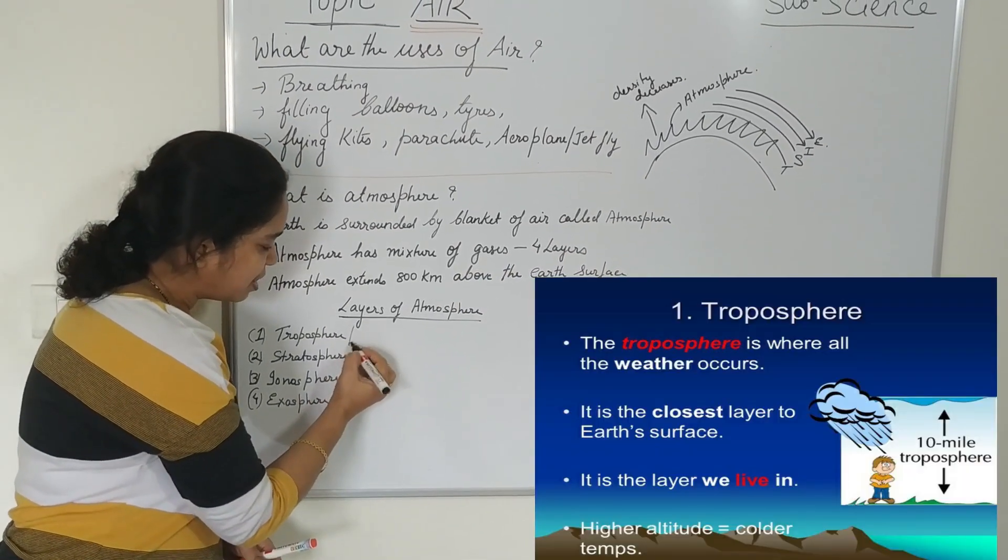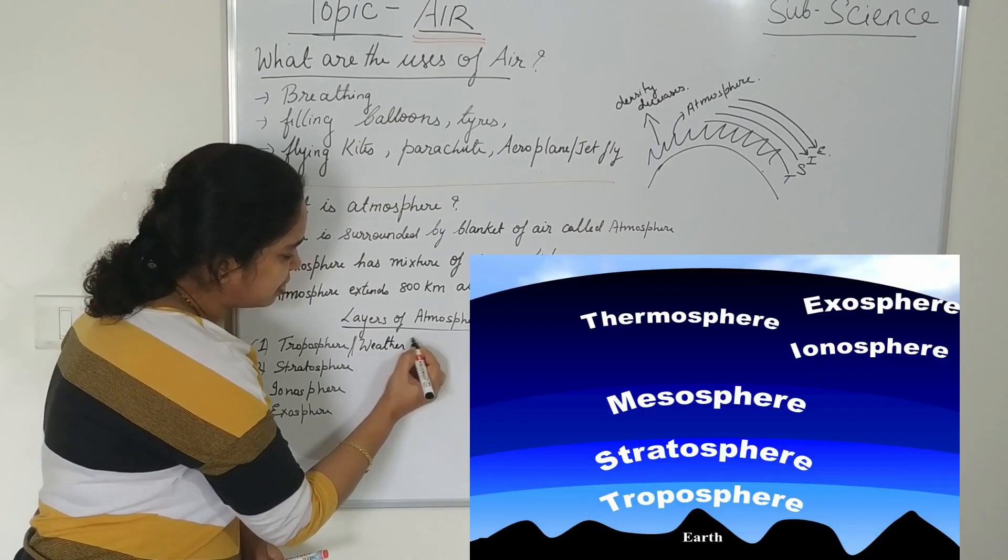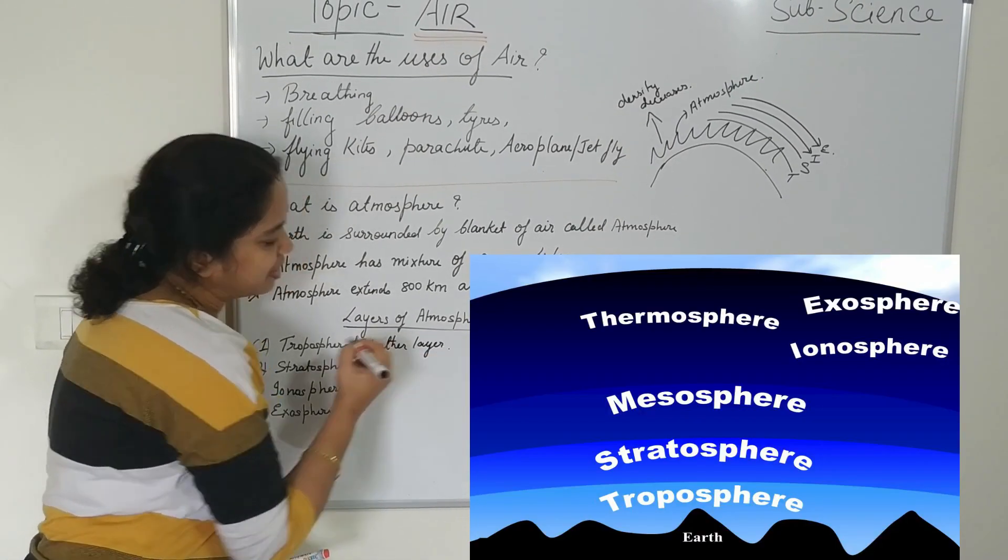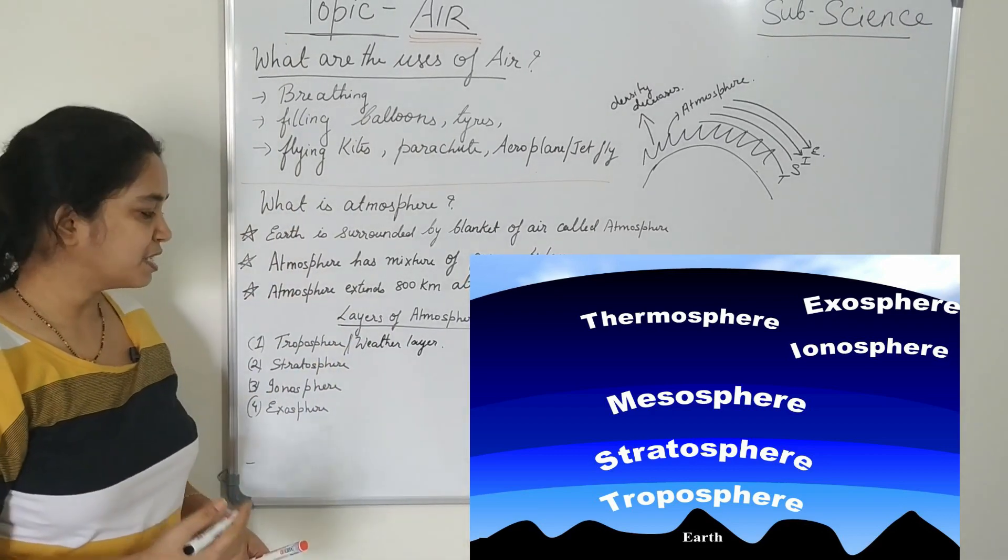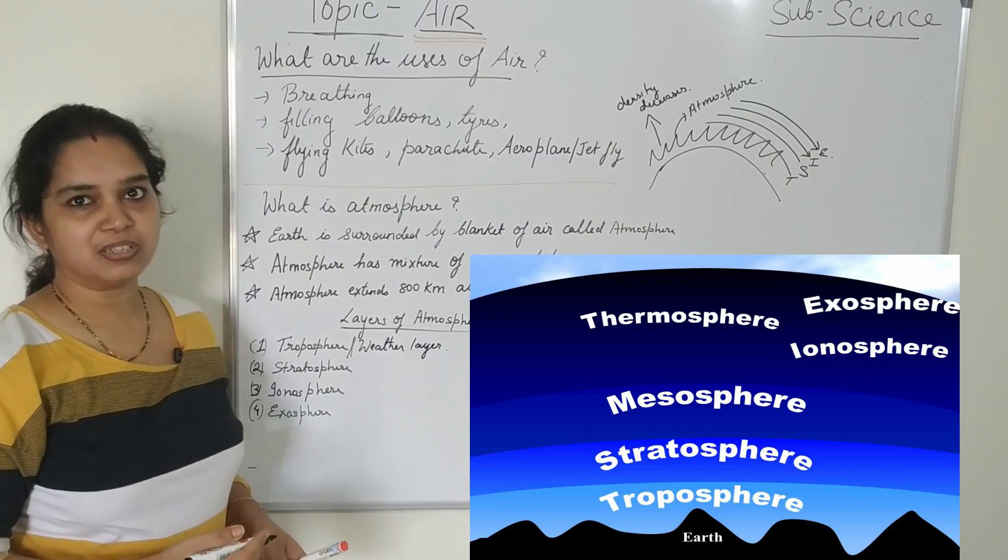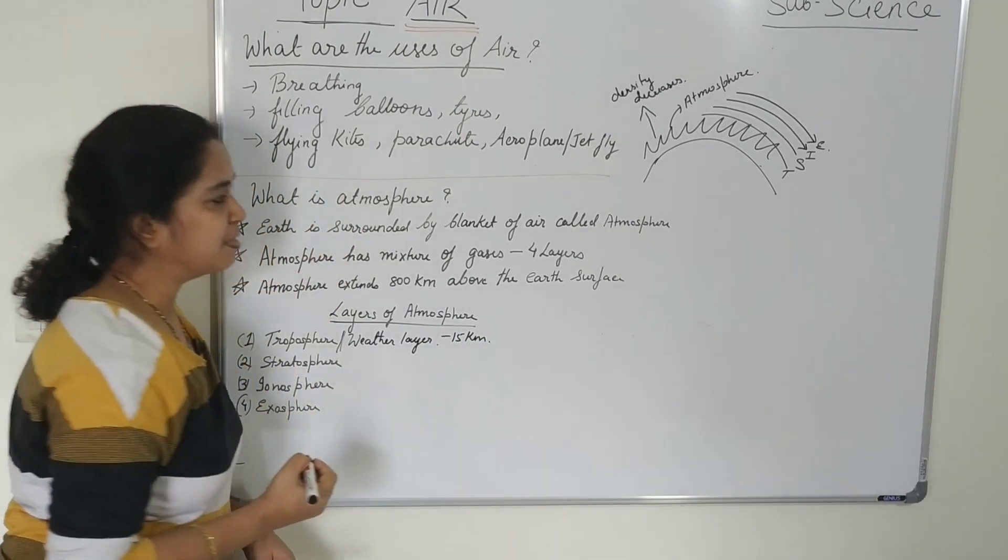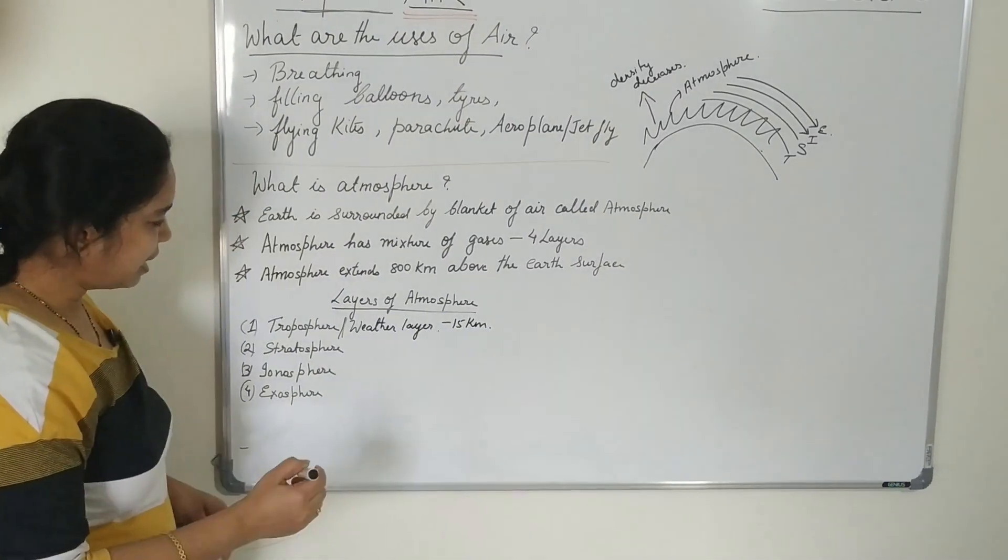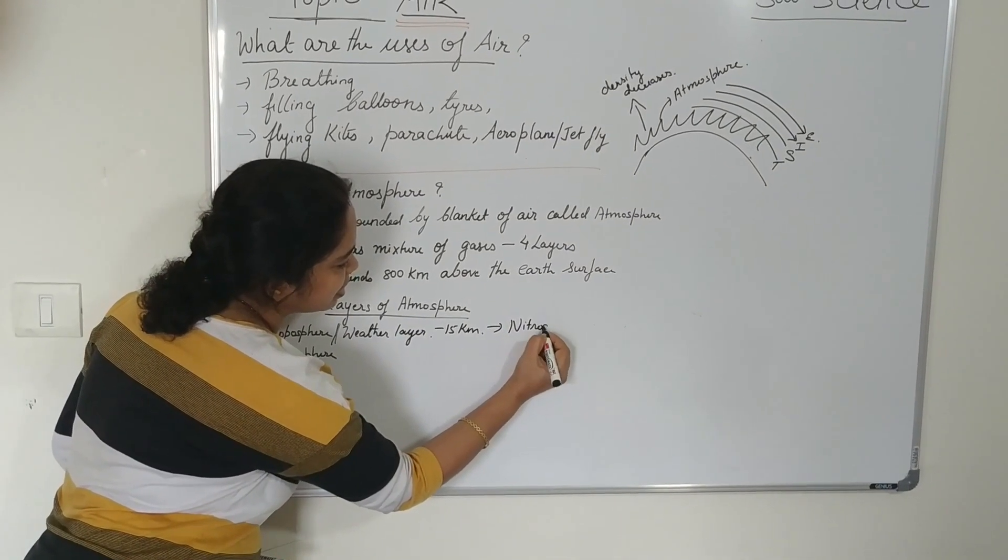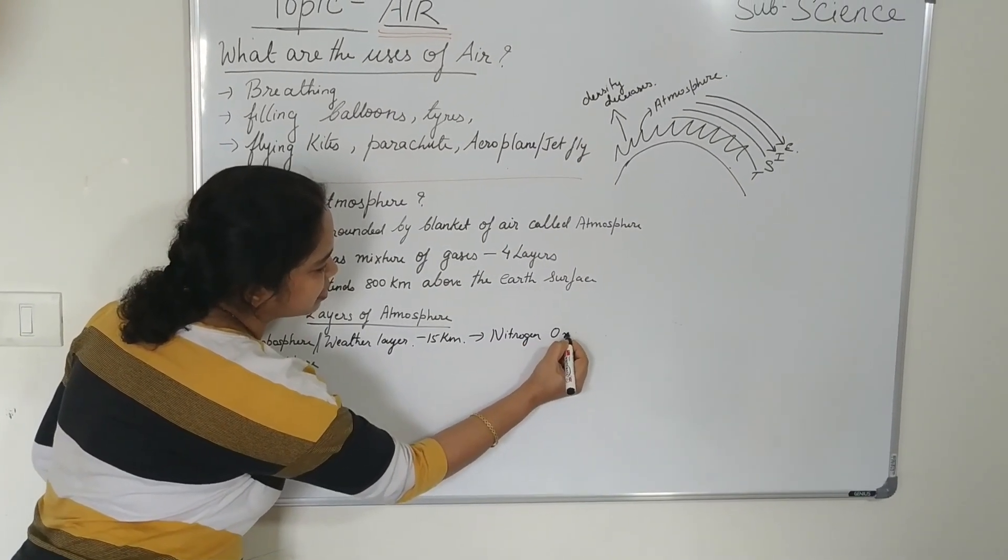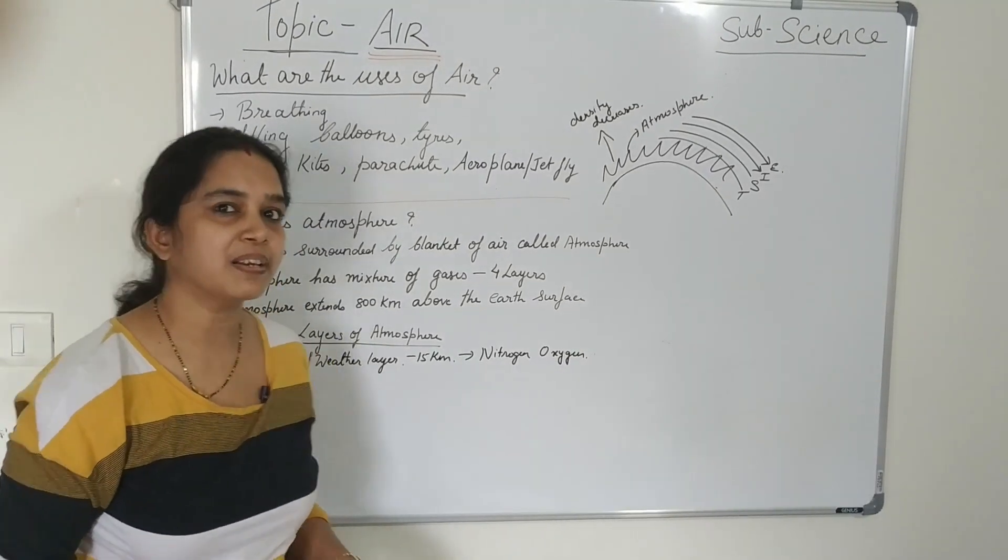The troposphere is also called the weather layer. It is also called weather layer because here the cloud formation, the rain and all takes place. The weather changes also takes place. And it extends up to 15 kilometers above the earth's surface. And the air here consists mostly of nitrogen and oxygen, which is very essential for the survival of the living organism.